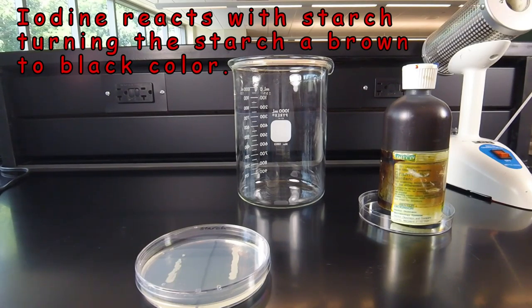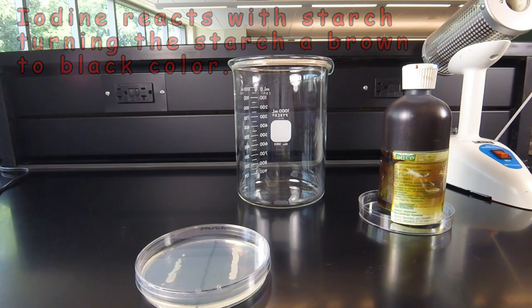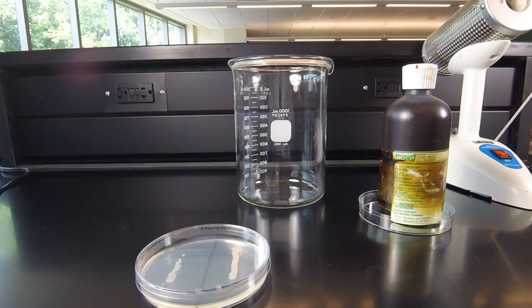Iodine combines with starch and turns the starch dark brown to black color. So if the iodine reacts with the starch and turns dark, we know that starch is still present and it has not been hydrolyzed.